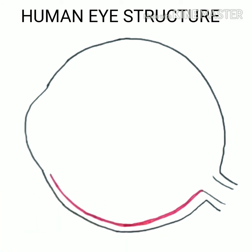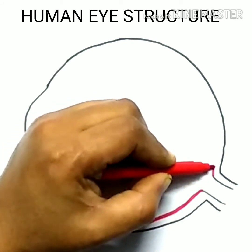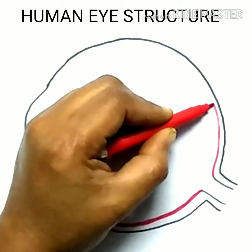Crystalline lens: Provides the focused real and inverted image of the object on the retina. It is composed of a fibrous jelly-like material. This convex lens converges light at the retina.